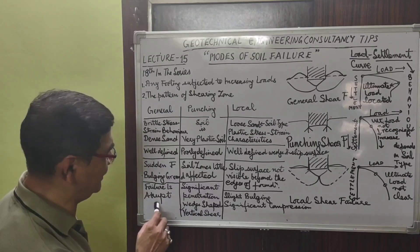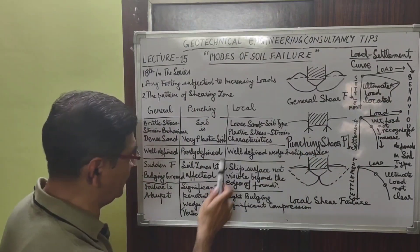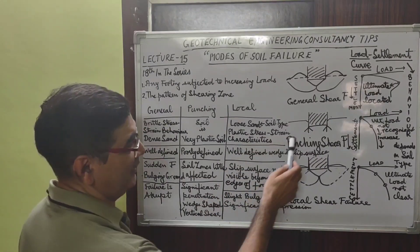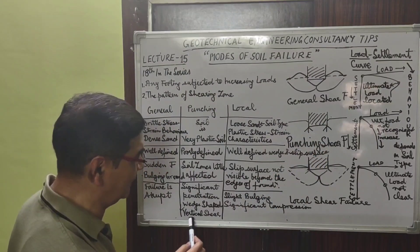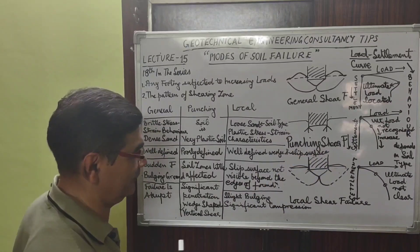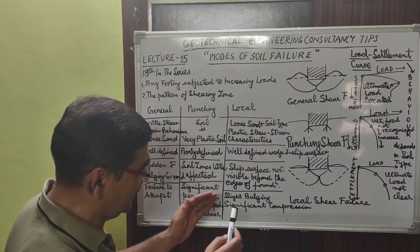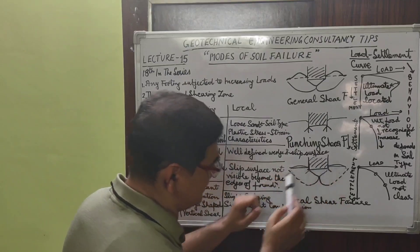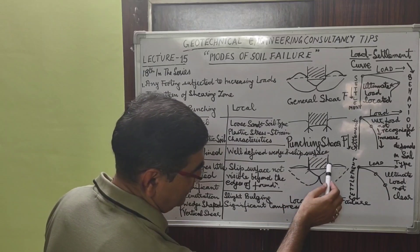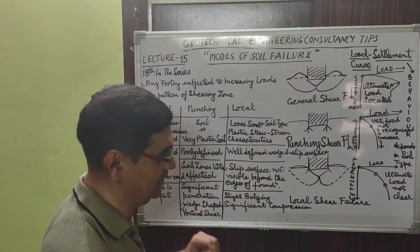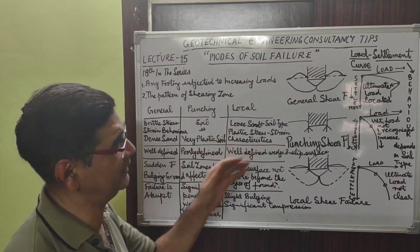In general shear failure, failure is abrupt as seen in the graph. In punching shear failure, significant penetration occurs — a vertical wedge shape denotes this vertical shear failure. In local shear failure, there is very slight bulging adjacent to the foundations above the normal ground level, but there is significant compression vertically below the foundation.